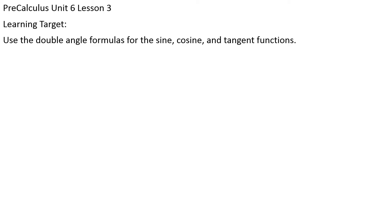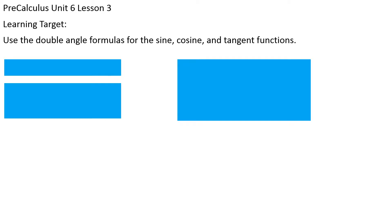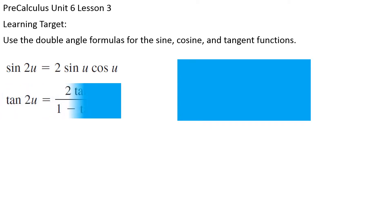In a moment you'll see that was not completely accurate — there's not just one formula for each. For sine, there is just one choice: sine of 2u equals 2 sine u cosine u. For tangent, there's also just one choice: tangent of 2u equals 2 times tangent of u, divided by 1 minus tangent squared u.